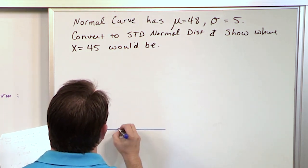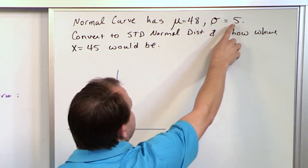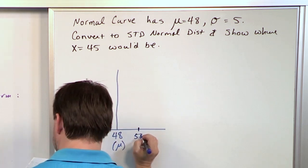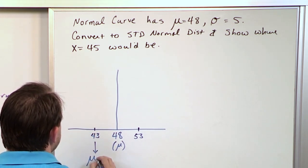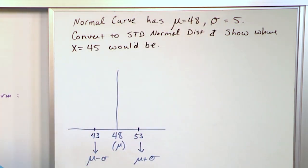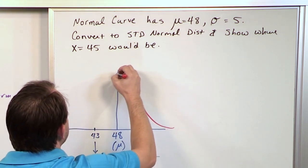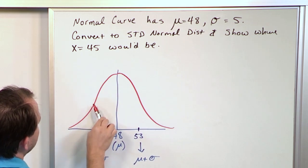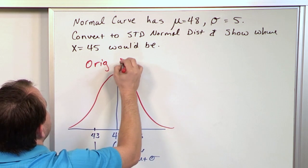Let's draw our first distribution. The mean is 48, and the standard deviation is 5. So one standard deviation above the mean is 53, and one standard deviation below is 43. I'm trying to make the standard deviations line up with the inflection points on the curve, where it changes direction, to give an idea of how spread it is. This is the original distribution.